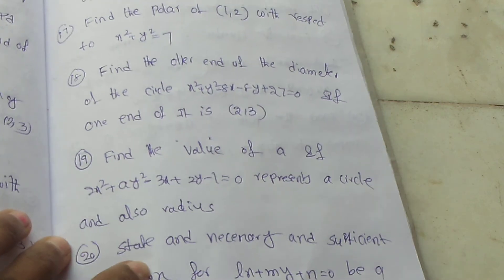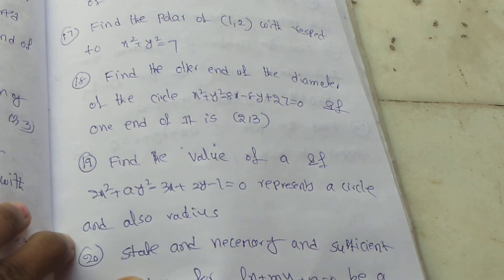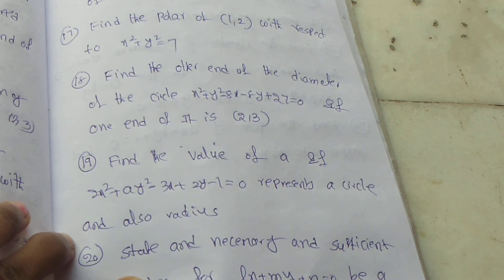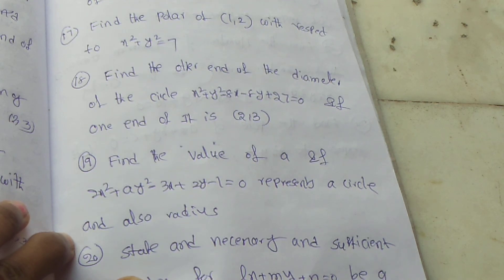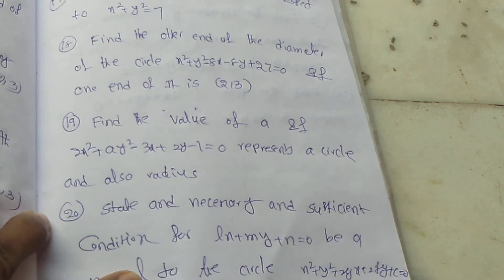Nineteenth question: Find the value of a if 2x square plus ay square minus 3x plus 2y minus 1 equal to 0 represents a circle, and also find the radius.